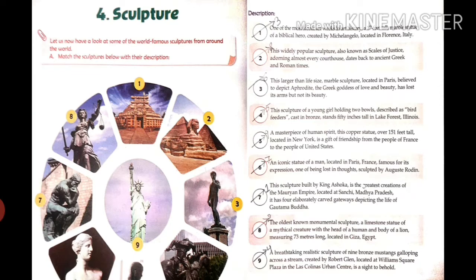Seventh one: this sculpture built by King Ashoka is the greatest creation of the Mauryan Empire, located at Sanchi, Madhya Pradesh. It has four elaborately carved gateways depicting — meaning 'describes' — the life of Gautama Buddha. It is related to the first picture.